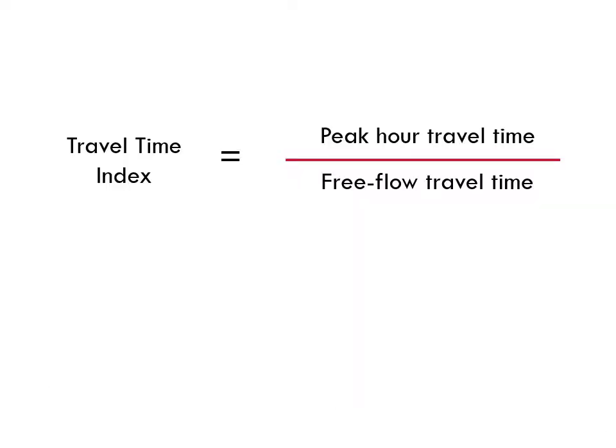To calculate the Travel Time Index, we simply divide the peak hour travel time by the free flow travel time. The peak hour travel time refers to how long a trip takes during rush hour, and the free flow travel time is how long a trip takes in the middle of the night when there are very few cars on the roadway.